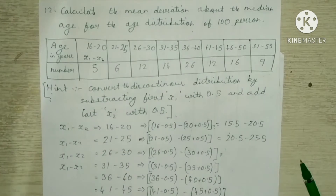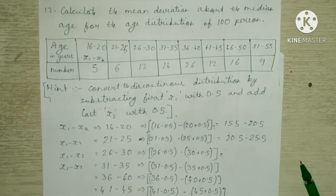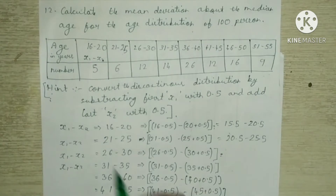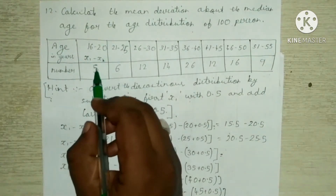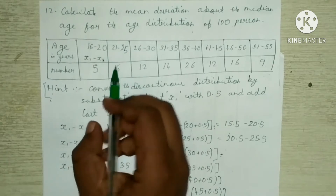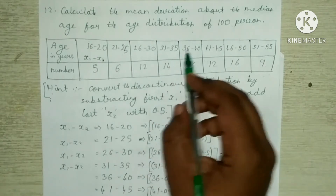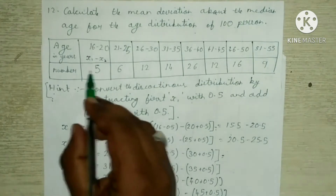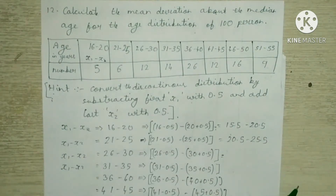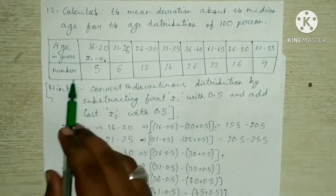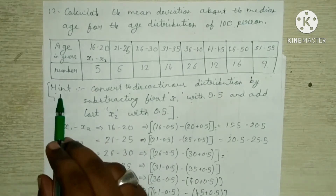Next, we will go with the twelfth question of exercise 15.1. Calculate the mean deviation about the median age for the age distribution of 100 persons — total number of persons is 100. Age division: 16 to 20 age 5 people, 21 to 25 age 6 people, 26 to 30 age 12 people, 31 to 35 age 14, and so on up to 51 to 55 age 9 people, total 100 people. Age is given from 16 to 55 and frequency is given in the question itself.